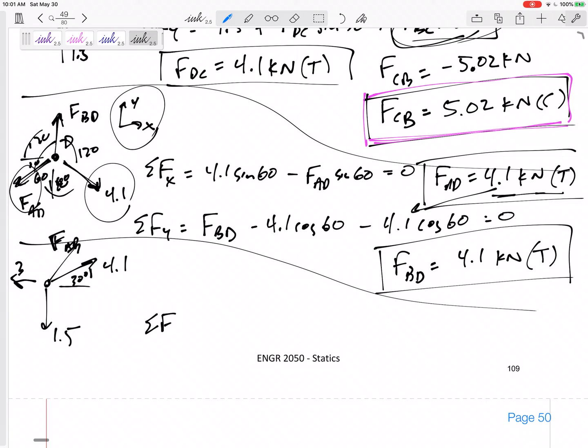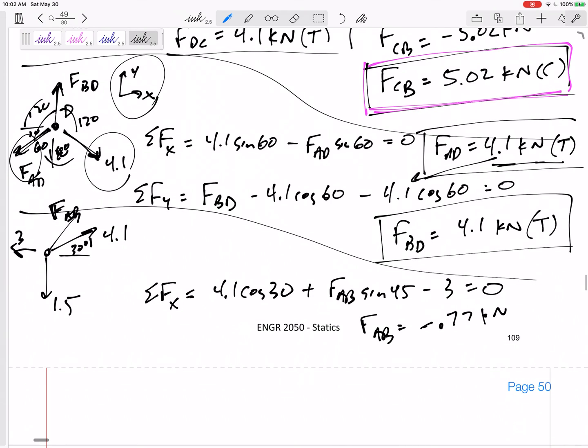So maybe summing the forces in X or summing the forces in Y. I could actually use either of those to solve. Summing the forces in X: 4.1 cosine 30 plus FAB sine 45 minus 3 equals 0. FAB comes out to be negative 0.77 kilonewtons. That negative means I guessed wrong. I always guess tension, so my negative means compression. FAB is 0.77 kilonewtons compression. And that's it.